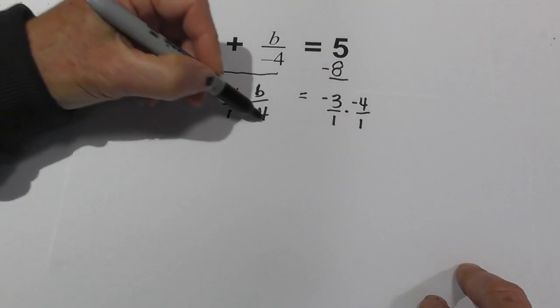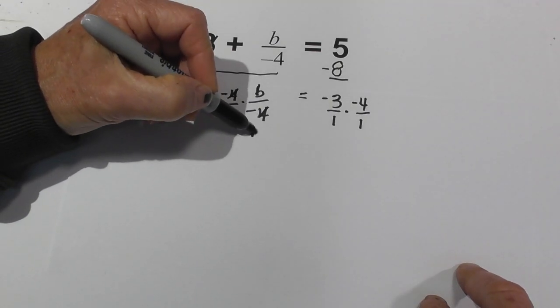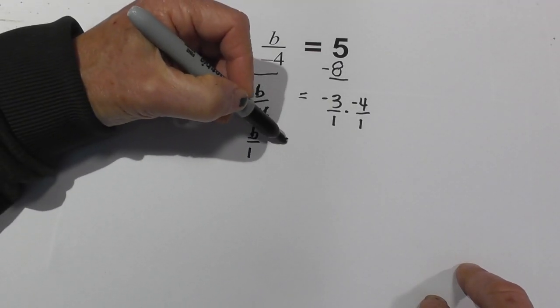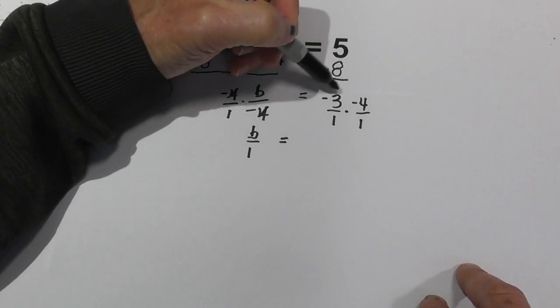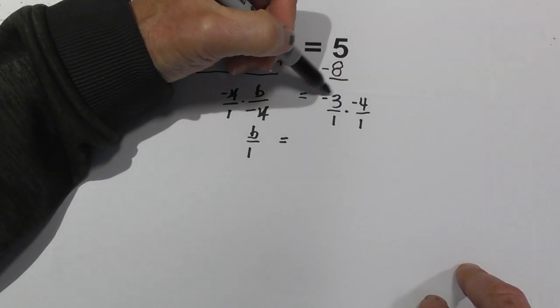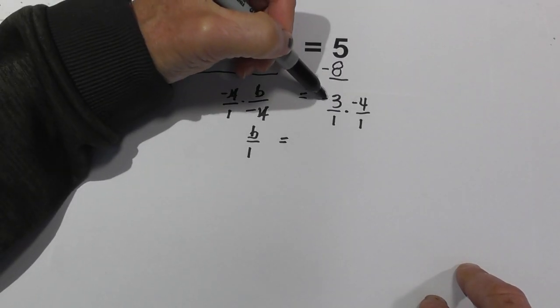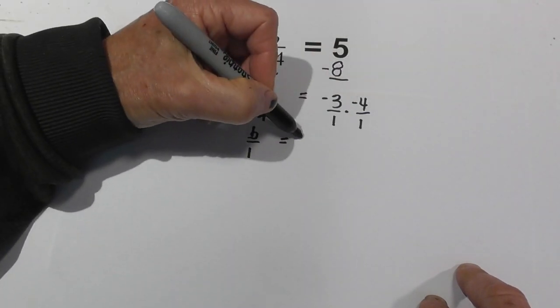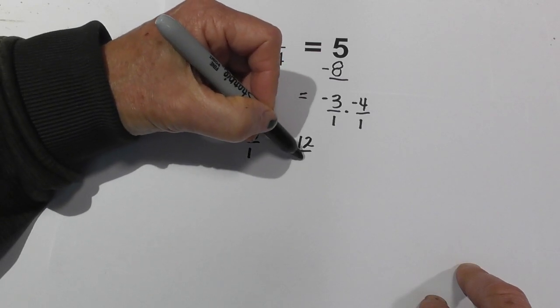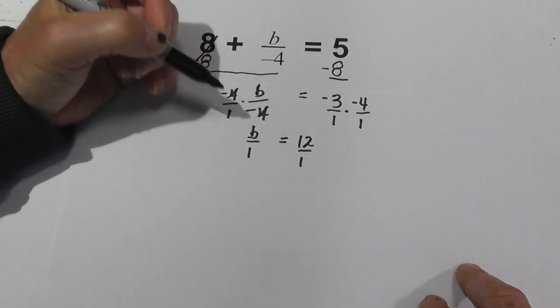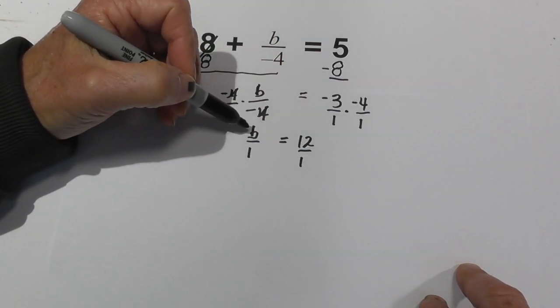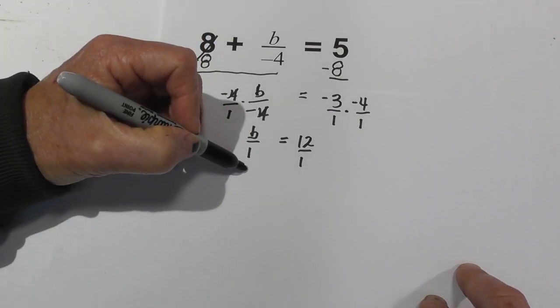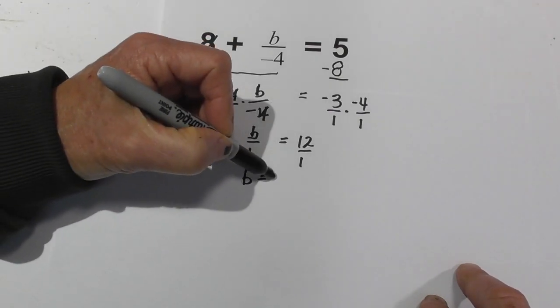Okay, let's see what we got. The 4s cancel, so that gives us b over 1 equals - now in multiplication you just multiply straight across, but be careful with the signs because a negative times a negative is a positive. So negative 3 times 4 is a positive 12 over 1. I now can just rewrite this because any number divided by 1 is itself. So it's b equals 12.